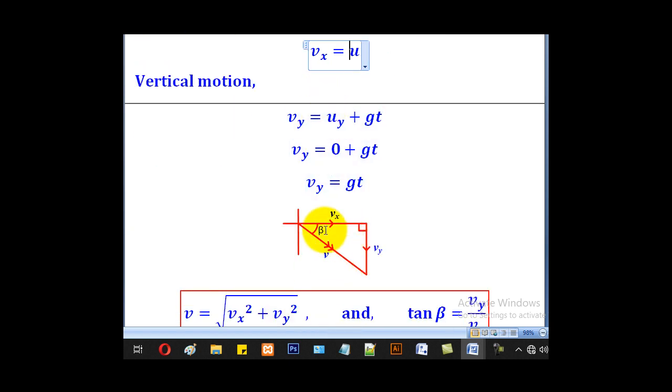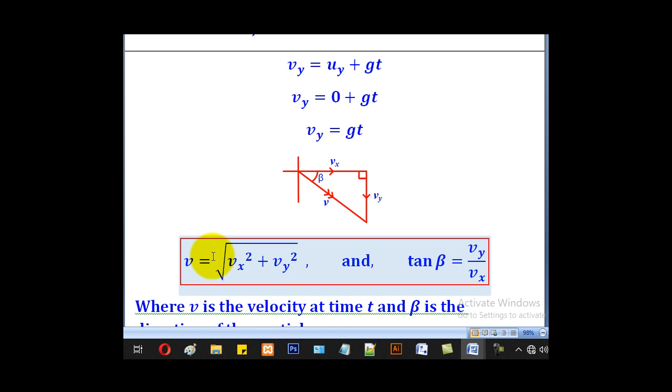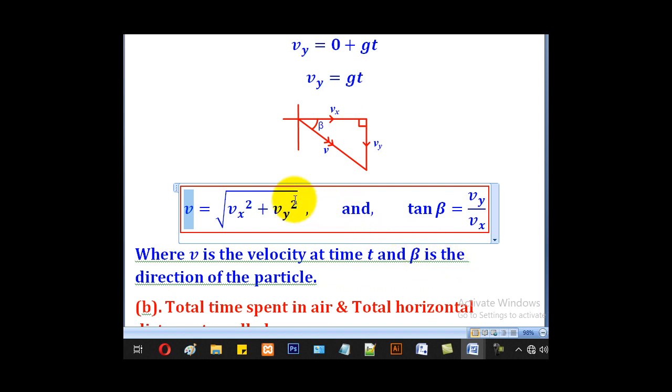So when you combine the two, you shall be able to come up with the velocity at any time t. From Pythagorean theorem, the square root of vx squared plus vy squared will give the velocity at any time t. Then beta is the angle or the direction of that velocity at that point. So tan beta will be equal to vy over vx. That's how we get the velocity at any time t and its direction.